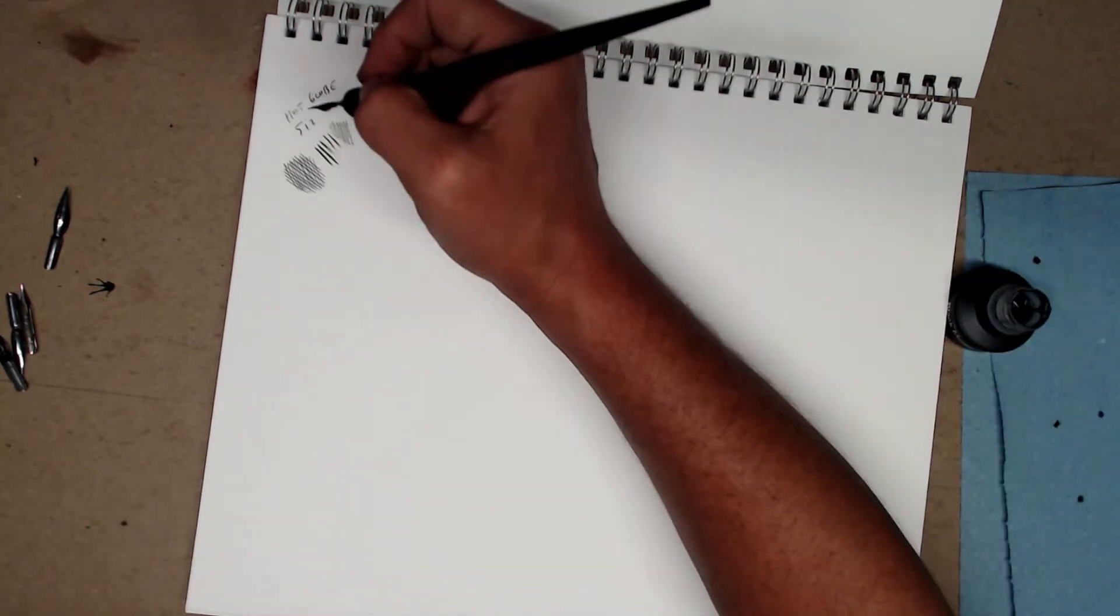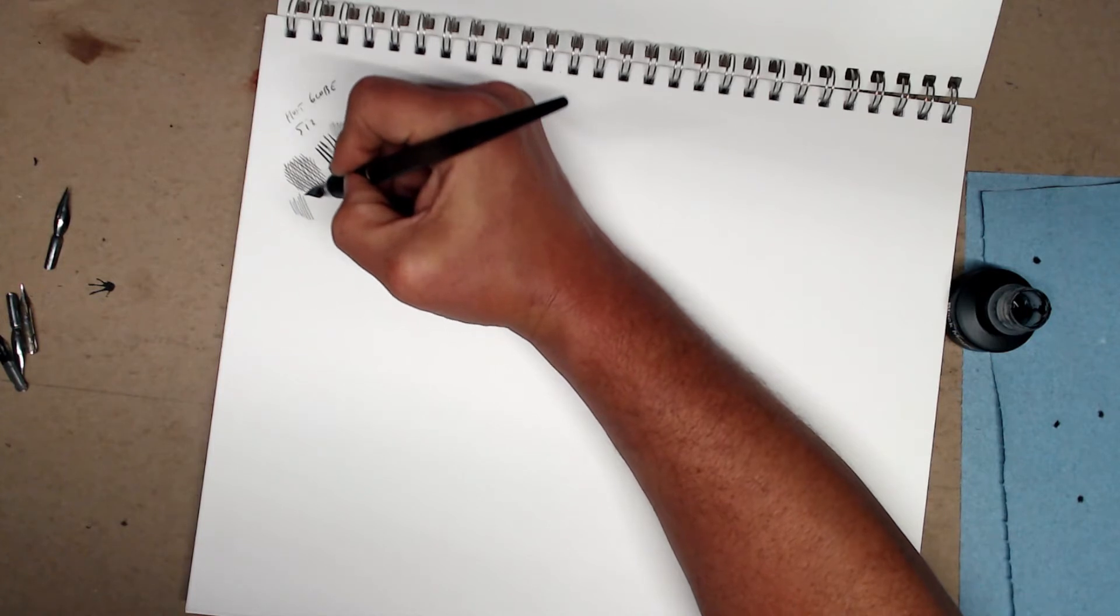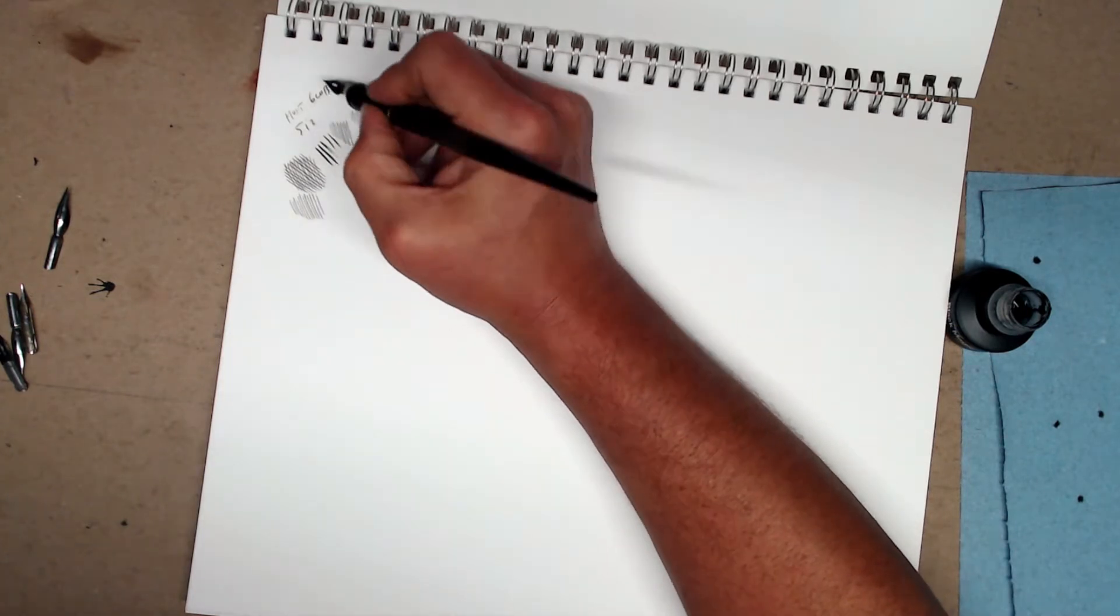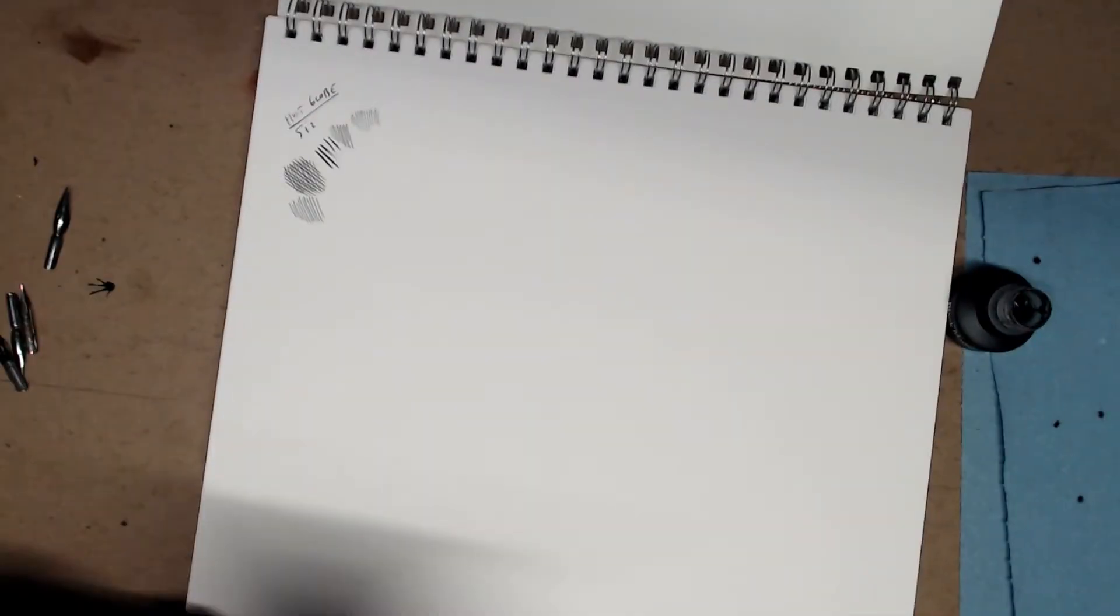It's definitely good for beginners. Just a very decent nib. So Hunt Globe 512. Commonly available in stores. Alright, so let's clean this off.